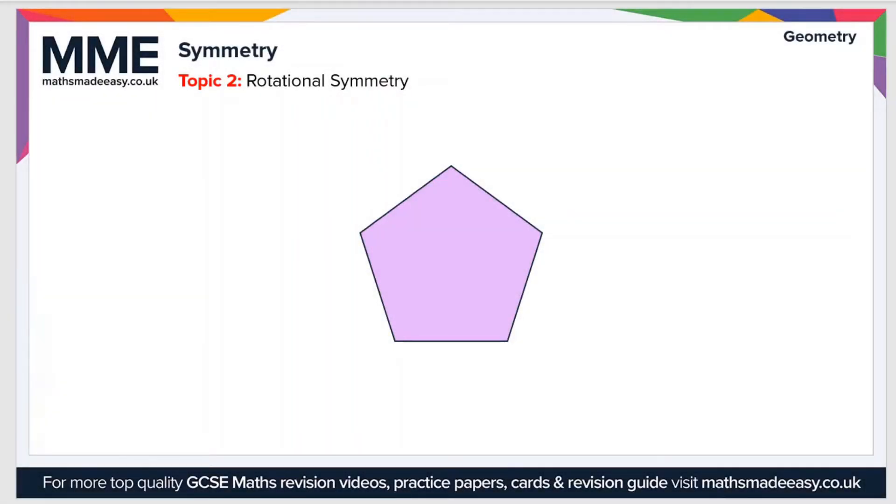Moving on to the second type of symmetry, and that is rotational symmetry. We describe rotational symmetry in terms of an order of rotational symmetry. The order of rotational symmetry is the number of times that shape can be rotated and still look the same.